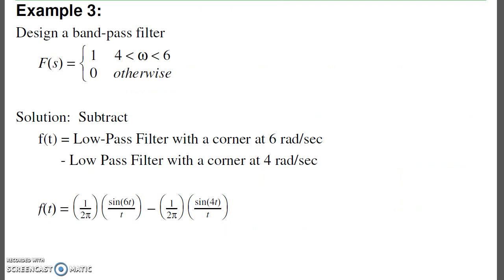I can also do more complicated filters. Let's build a bandpass filter. Pass frequencies between 4 and 6 radians per second. One way to do that is split it up. I've got two filters. Pass frequencies up to 6 radians per second. Pass frequencies up to 4 radians per second. Take the difference.